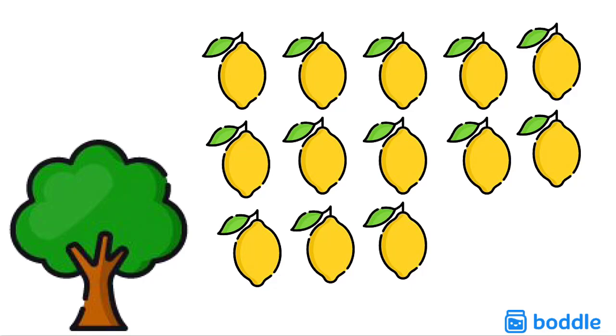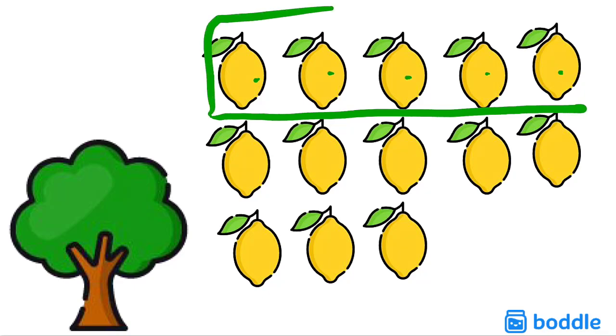The first thing I see when I look at my group of lemons is a beautiful lemon tree, and I want to pick them and see how many lemons I have. Well, I first see one row of 1, 2, 3, 4, 5 lemons on top.